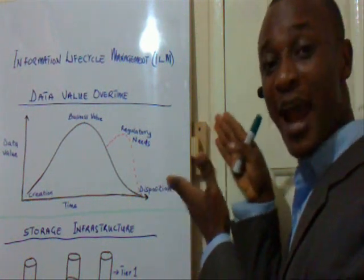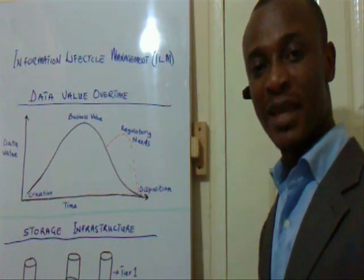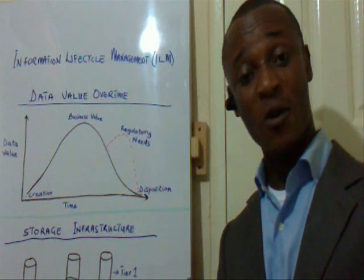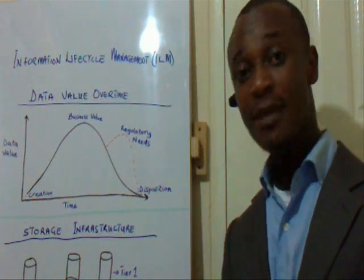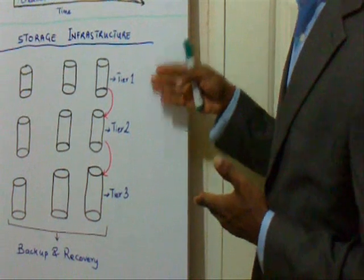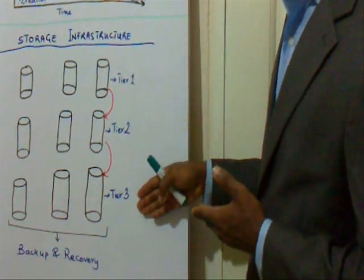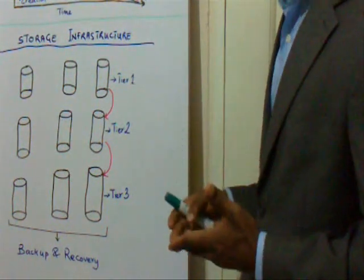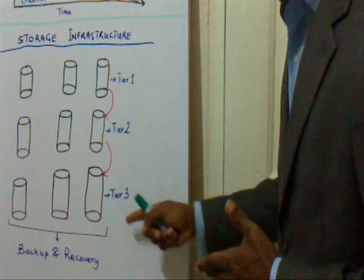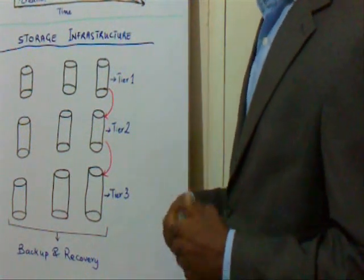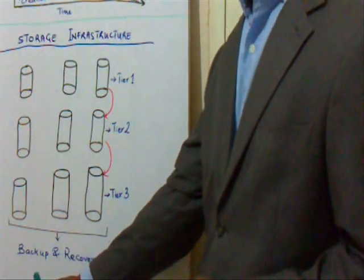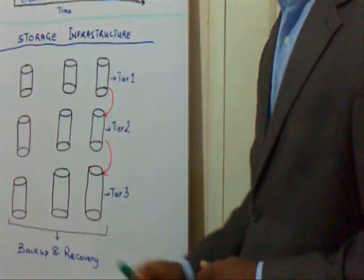And the question again is, how do we map the concept of ILM to our storage infrastructure? This is done by storage tiering. Tiering is where your storage resources are classified according to their reliability, costs, and performance. On the diagram here, you will notice that our storage infrastructure has been grouped into three: Tier 1, Tier 2, and Tier 3. Tier 1 is high performance disks, which are also expensive. Tier 2 are medium performance disks, which are less expensive. And Tier 3 are also less expensive and low performance disks. You could also have your backup system to keep historic information for regulatory needs, and a recovery system to help in terms of disk failure.